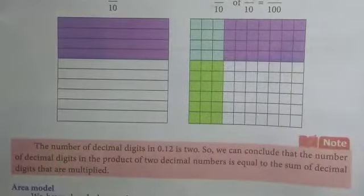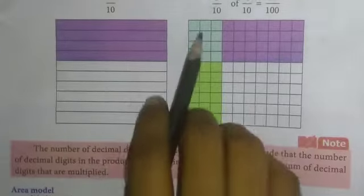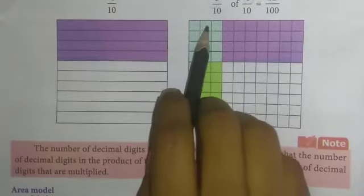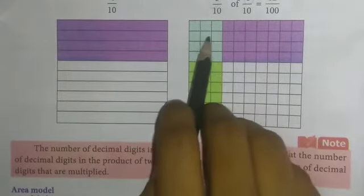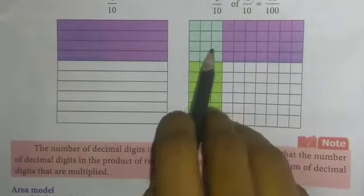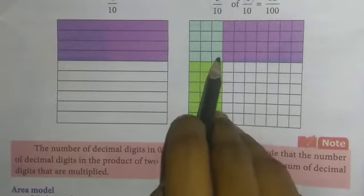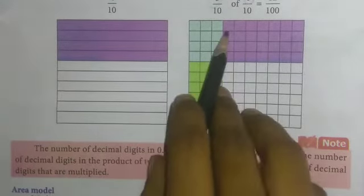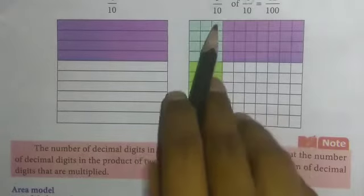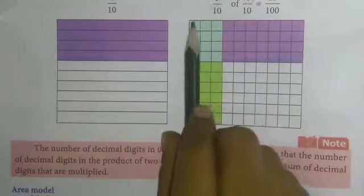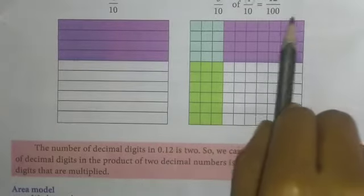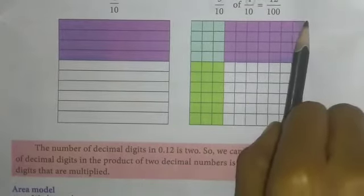Here, counting the common squares: one, two, three, four, five, six, seven, eight, nine, ten, eleven, twelve. The twelve squares we have shared row-wise.